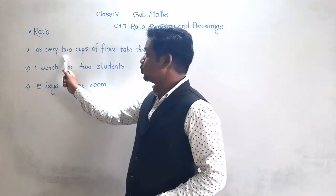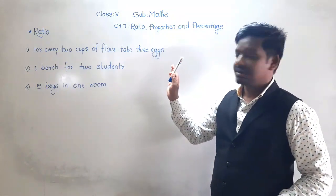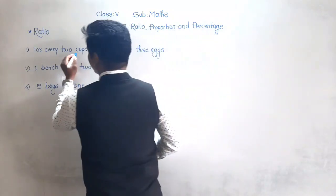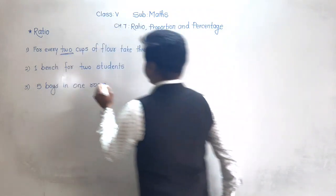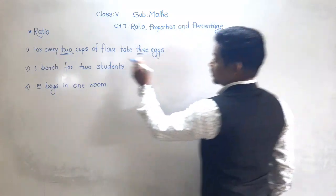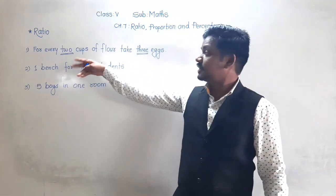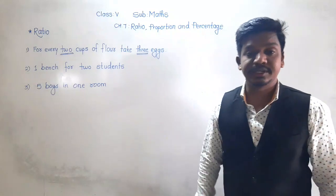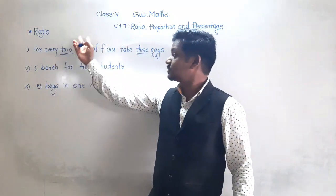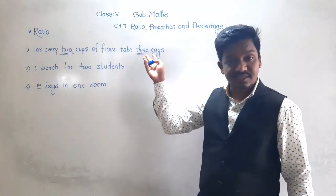For every 2 cups of flour, take 3 eggs. This is a recipe for making cake. For every 2 cups of flour, how many eggs are needed? 3 eggs. So if there are 2 cups of flour, there should be 3 eggs. If there are 4 cups of flour, then how many eggs are needed? 2 twos are 4, so 3 twos are 6.